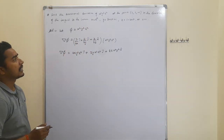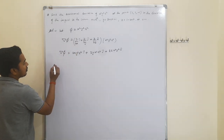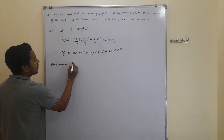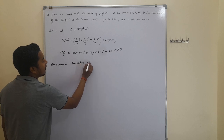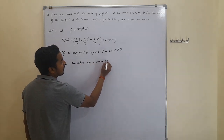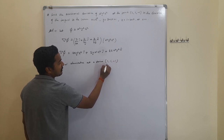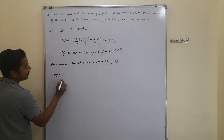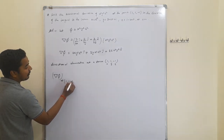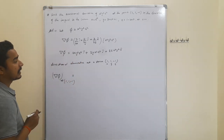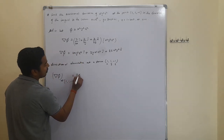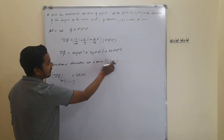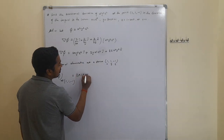We have to find the directional derivative at the point (1, 1, -1). Substituting x=1, y=1, z=-1 into the gradient: for the î component, 2×1×1²×(-1)² = 2×1×1×1 = 2 î.